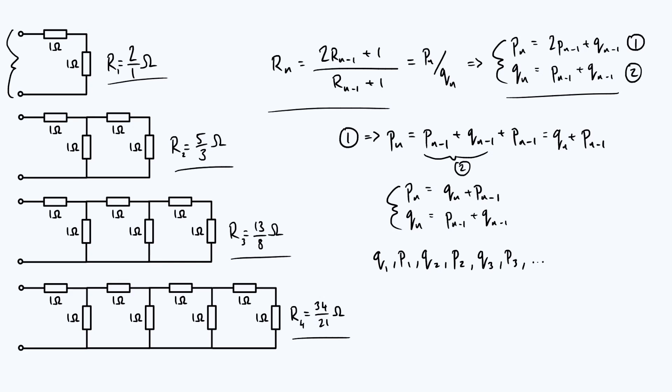Now what do we know about this sequence that we've made? Well we know the first two terms because remember that R1 was just 2 or 2 over 1, and so we can take P1 to be 2 because that's the numerator, and Q1 to be 1, so let me just write those there, Q1 is going to be 1 and P1 is going to be 2.